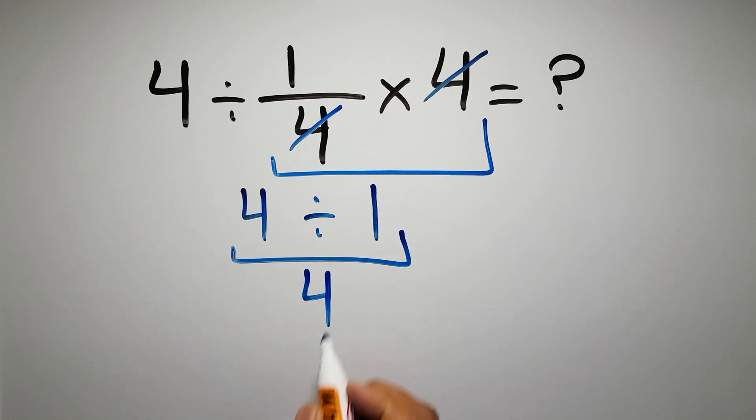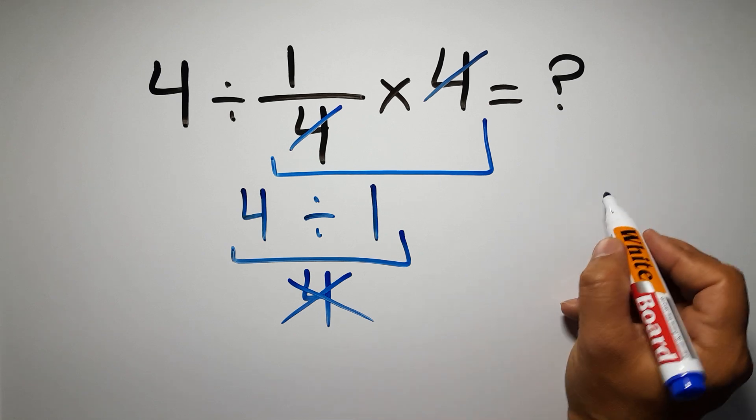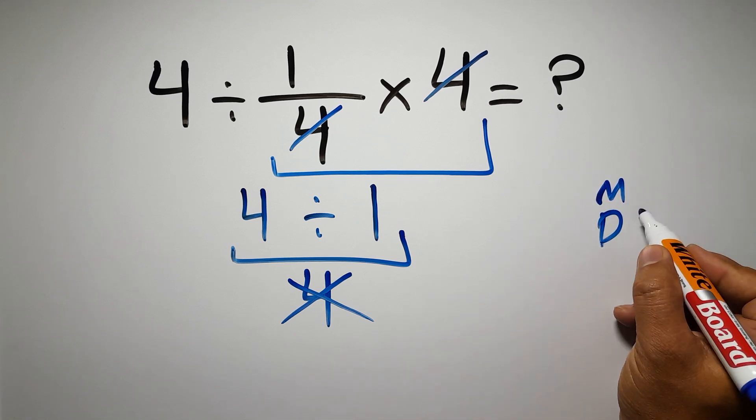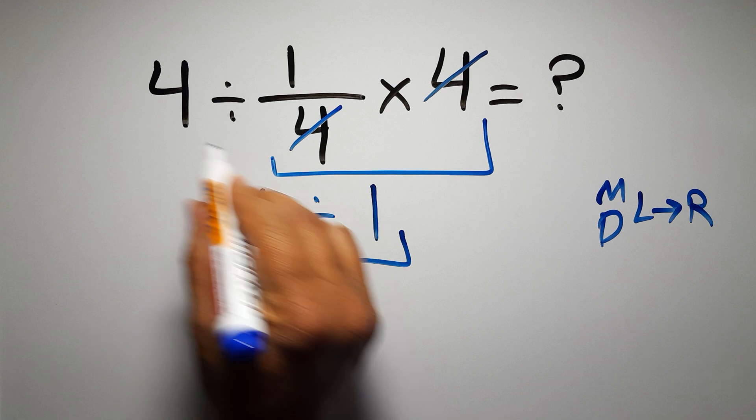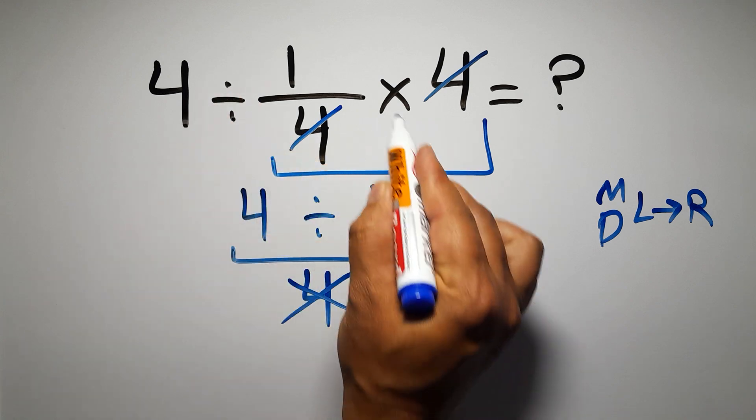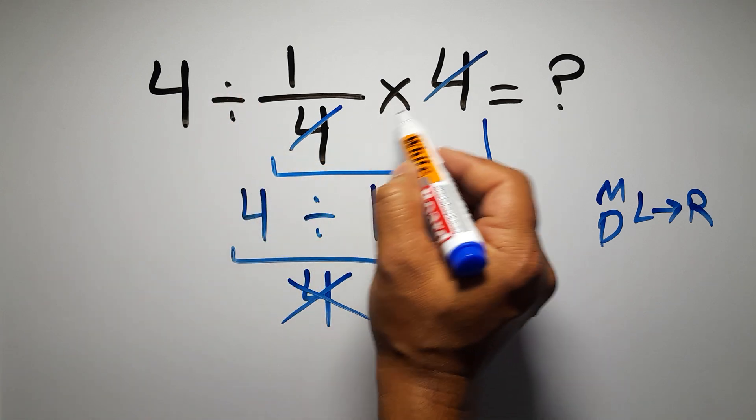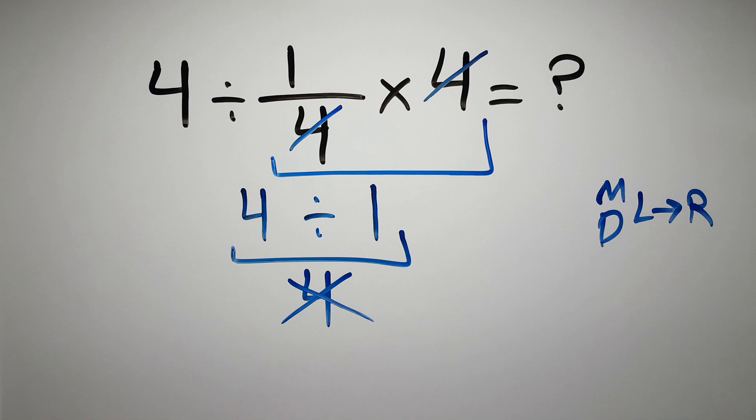But this answer is not correct. Because according to the order of operations, multiplication and division have equal priority, and we have to work from left to right. So here, first we have to do this division, then this multiplication. If we do this multiplication before this division, it is wrong.